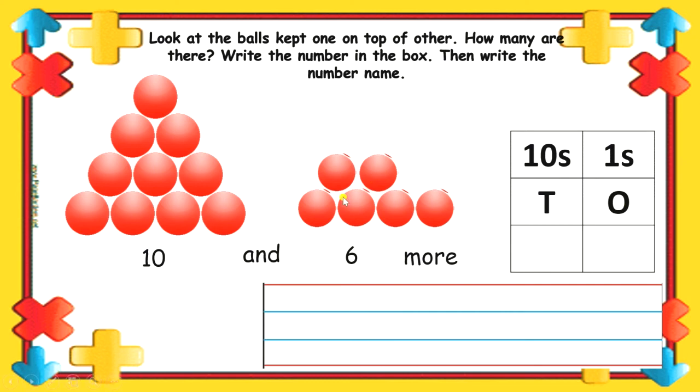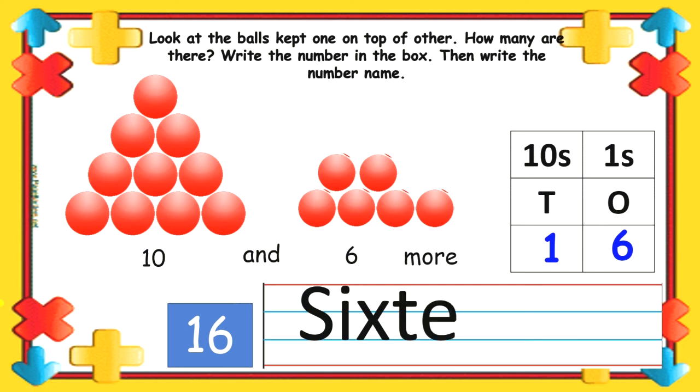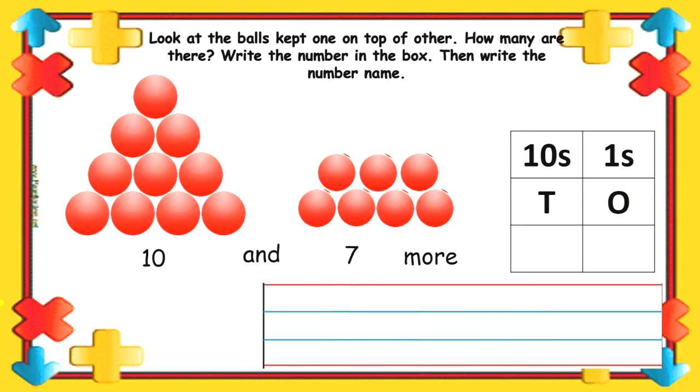Next 10 and 6 more becomes 16. So, we write 6 in 1's place and 1 in 10's place. The spelling is S-I-X-T-E-E-N.